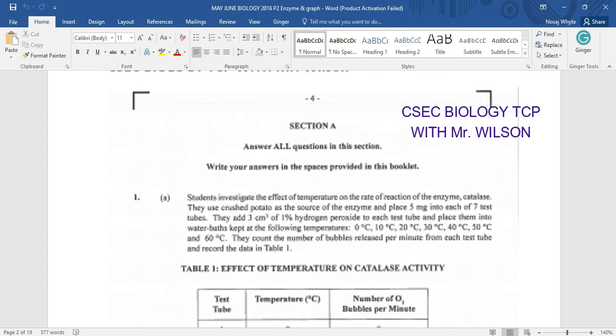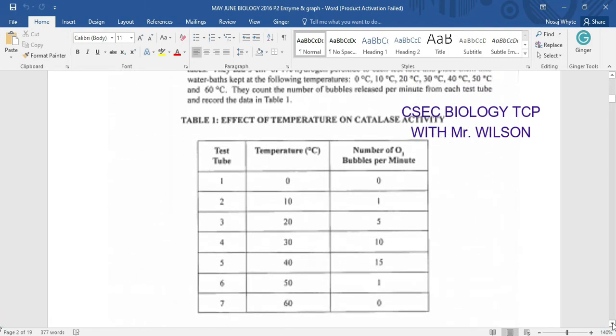Zero degrees Celsius, 10 degrees Celsius, 20 degrees Celsius, 30 degrees Celsius, and of course 40 degrees Celsius. They also had two at 50 degrees Celsius and 60 degrees Celsius respectively. They count the number of bubbles released per minute from each test tube and of course recorded the data in the table you are seeing below. Here you would have seen the aim of a lab and the procedure. Now we're going to be looking at the observation after which we're going to be doing the analysis with a graph.